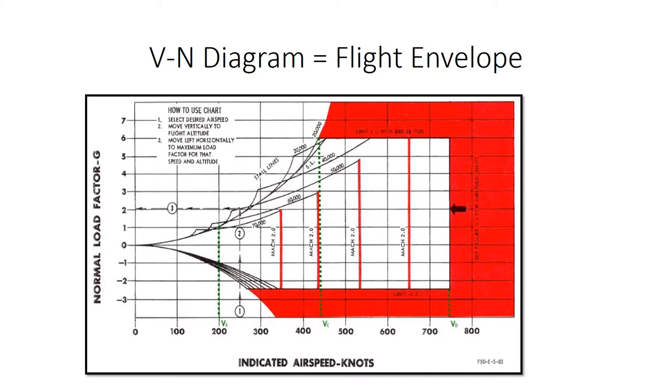To be more specific, the flight envelope is made up of a collection of VN diagrams. In other words, the VN diagrams are the flight envelope. A VN diagram works by correlating the relationship between the load factor, the airspeed, and the altitude.